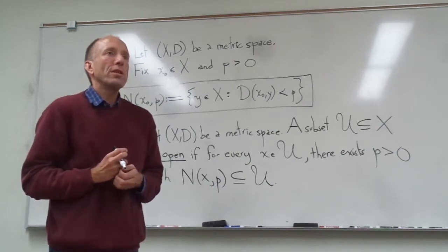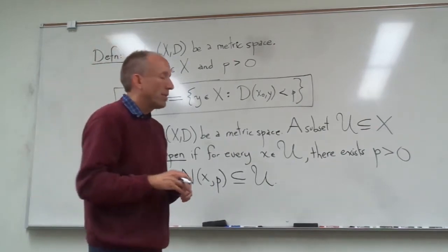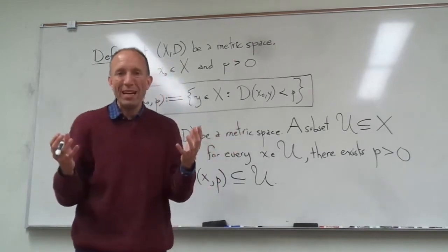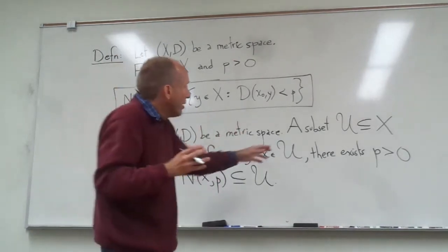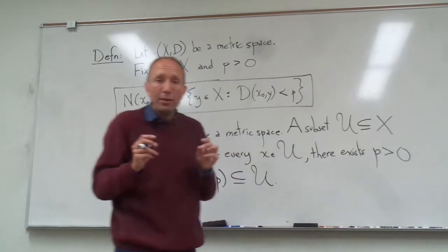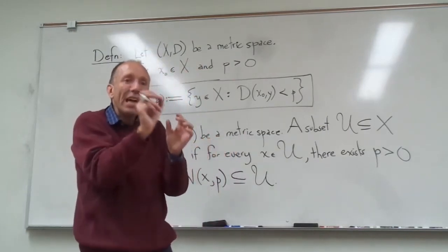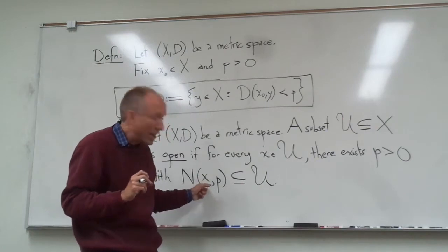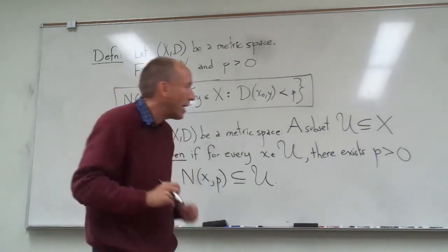In other words, there's one way of thinking about it is there's no points that are on the boundary of u. Every point that is in u is sufficiently inside of u that you can make a neighborhood that is around that point that is still inside of u.